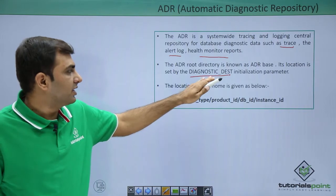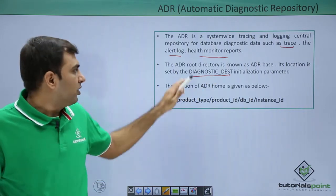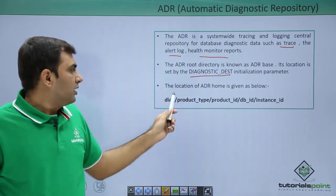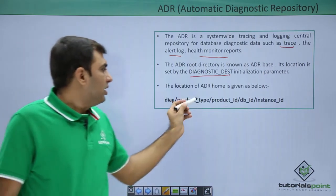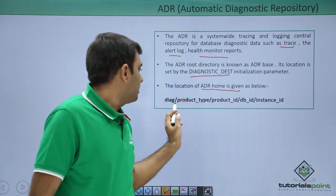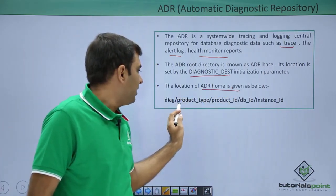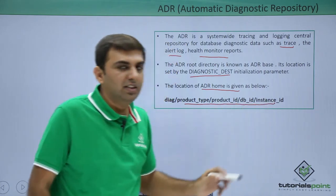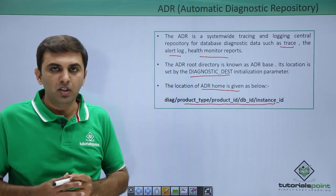You need to set the diagnostic_dest initialization parameter for the ADR root directory. The location of the ADR home is given as: ADR_base/diag/product_type/product_id/dbid/instance_id — this is the location of the ADR home.